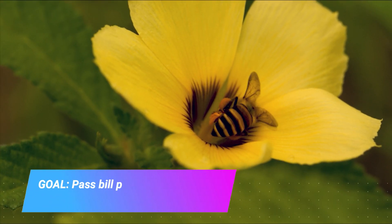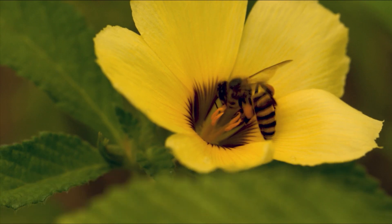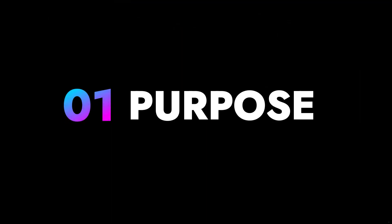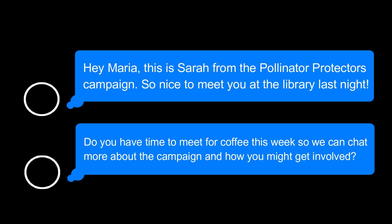Let's say I'm running a campaign in my city, Starland, to pass a bill protecting pollinator species through city council. Yesterday, I had a meeting at the local library for anyone who was interested in learning more and potentially getting involved in the pollinator campaign. One of the people who showed up was a person named Maria, and she signed an interest sheet and gave her email and phone number at the end of the meeting. Now for the first step of the one-on-one — purpose — I'm going to text Maria and say something like, 'Hey Maria, this is Sarah from the Pollinator Protectors campaign. So nice to meet you at the library last night. Do you have time to meet for coffee this week so we can chat more about the campaign and how you might be able to get involved?'